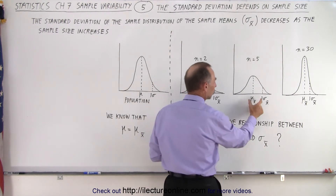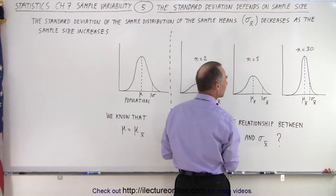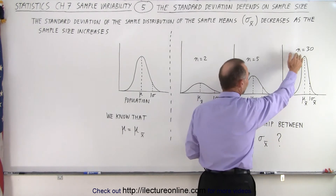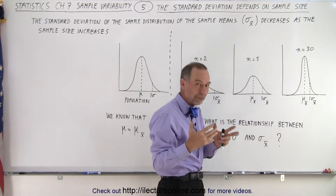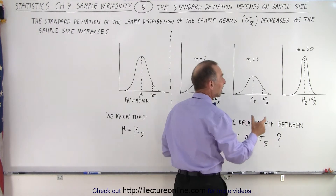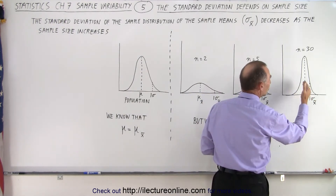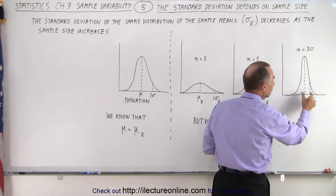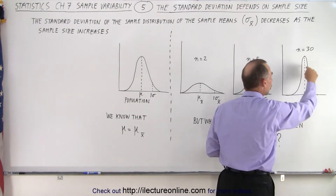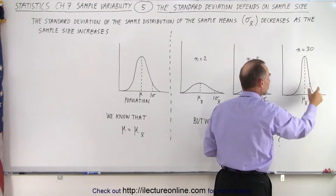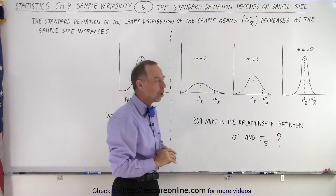We have a smaller standard deviation in the sample means. And then as the sample size goes all the way to 30, which is a preferable minimum number for a sample size, notice the standard deviation of the distribution of the means is relatively small. We have much more of what we call a normal distribution.